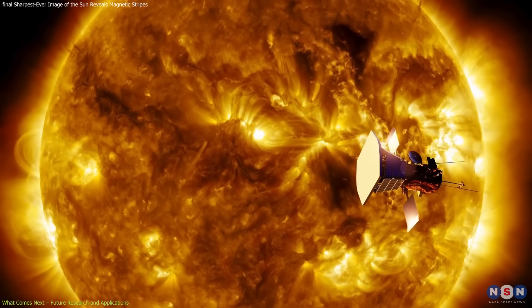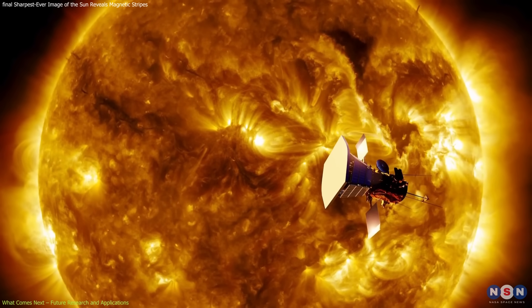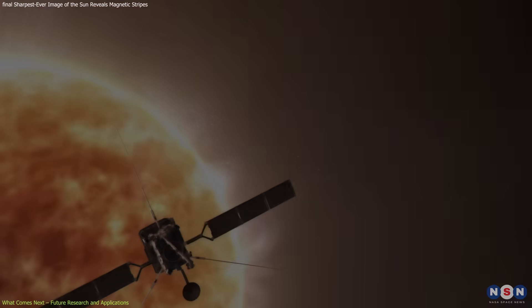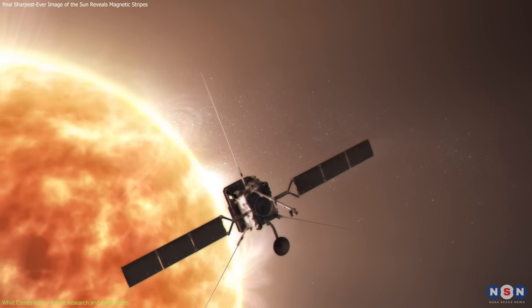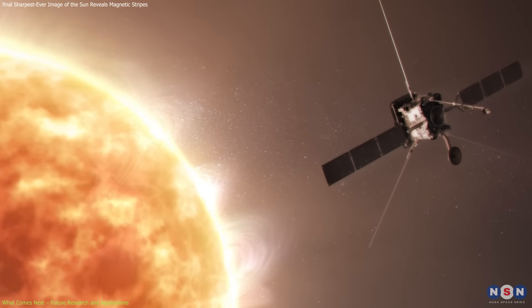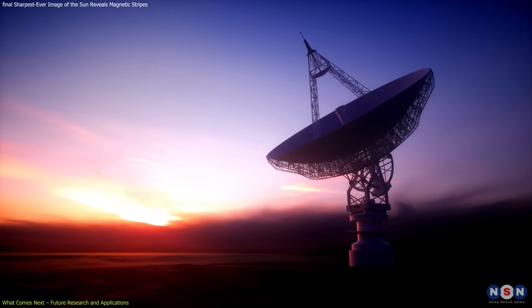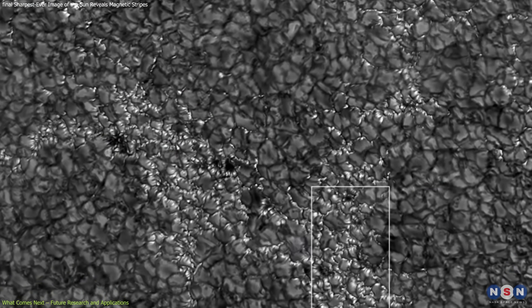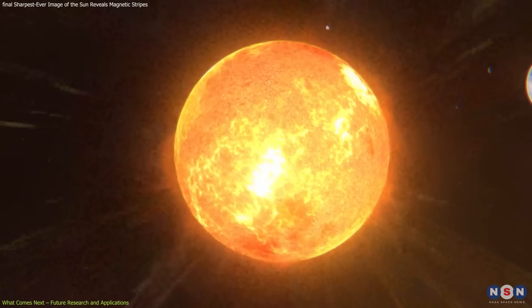Another path forward involves cross-referencing data from other missions. NASA's Parker Solar Probe and ESA's Solar Orbiter are currently studying the Sun from within the inner heliosphere. Coordinated observations from space and ground will allow scientists to connect surface-level magnetic patterns like striations with atmospheric phenomena, such as flares, jets, or solar wind fluctuations.